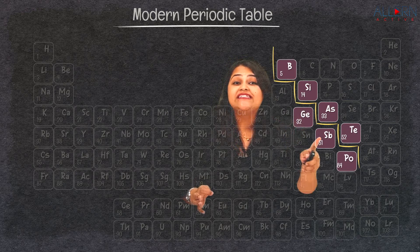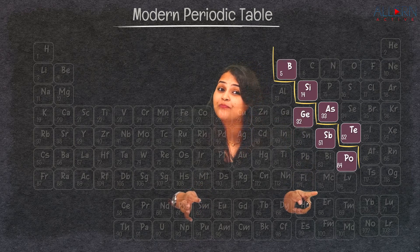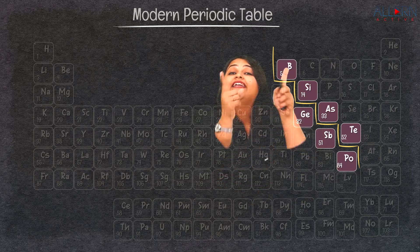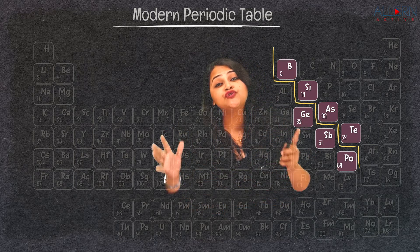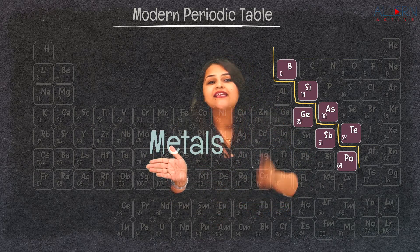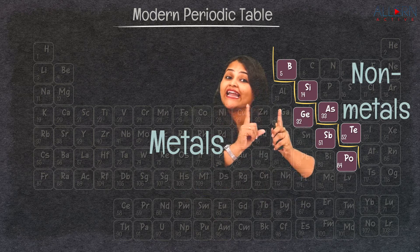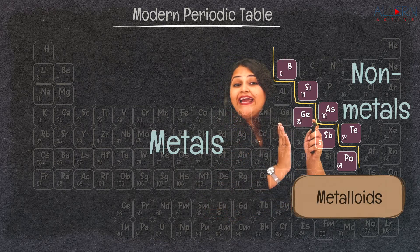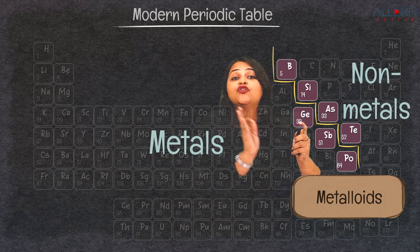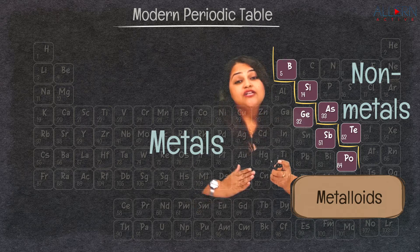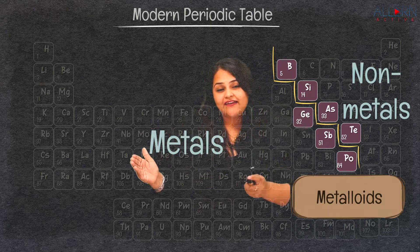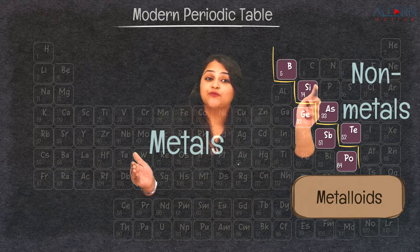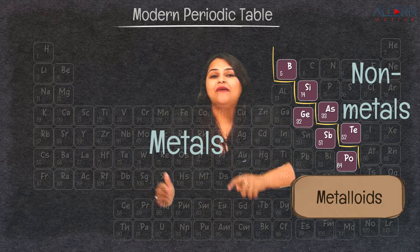Do you observe this zigzag line on the periodic table? This zigzag line marks the intermediary elements which show the properties of both metals and non-metals — these are called metalloids. The elements on the left side of the zigzag line are the metals, and those on the right side are the non-metals.